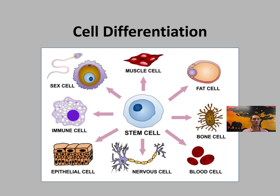Gene expression controls this entire process, allowing different cell types — muscle cells, heart cells, skin cells — to be produced from the same DNA. Every cell has the same DNA; it is which genes are activated that dictates which type of cell is produced.